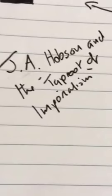This is just a short video to explain to you the theories of J.A. Hobson and what he referred to as the taproot of imperialism. So firstly, let's look at industrial society as Hobson saw it.